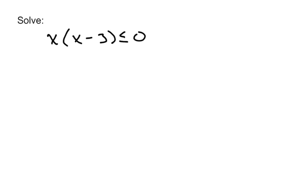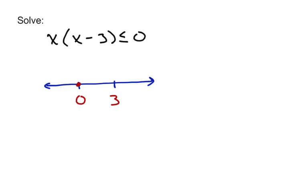Let's try another one: x times x minus 3 being less than or equal to 0. First, we create our sign chart — our number line — and identify our critical values. They're going to happen at 0 and 3, because if I plug 0 in for x the expression equals 0, and if I plug 3 in for x the second factor equals 0, so the whole product is 0. Now test each interval.